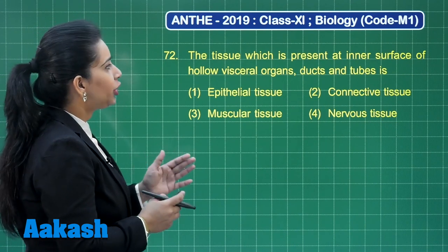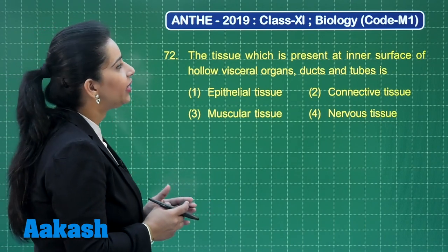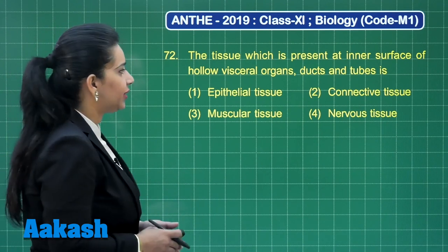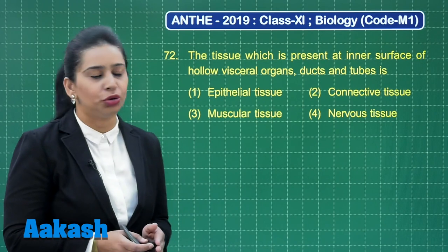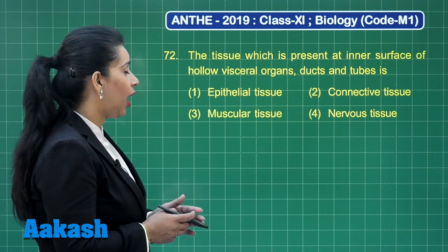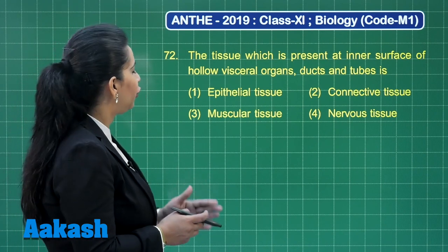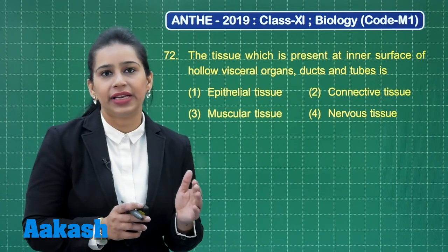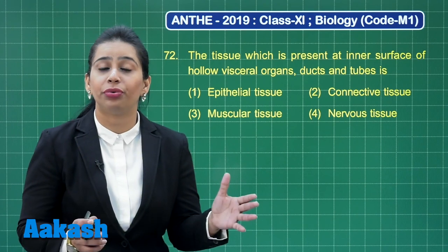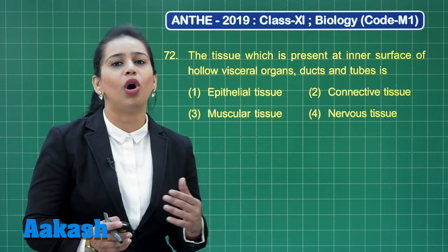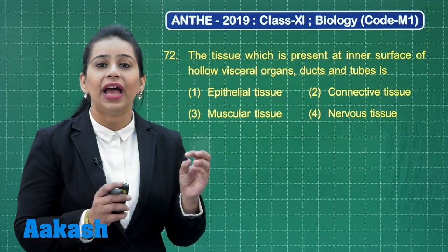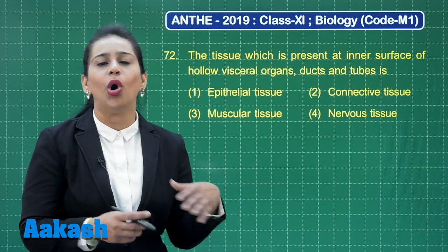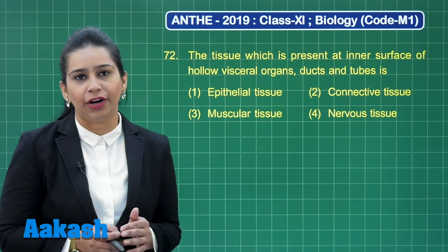The next question is: the tissue which is present at the inner surface of hollow visceral organs, ducts and tubes — again a question from animal tissues. The four options given are epithelial tissue, connective tissue, muscular tissue, and nervous tissue. Epithelial tissue is the type of tissue comprised of a single or multiple layers of cells, and this tissue has the property of making the lining or covering of tissues and organs.